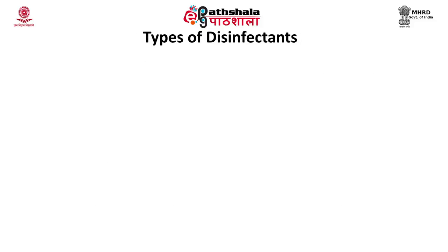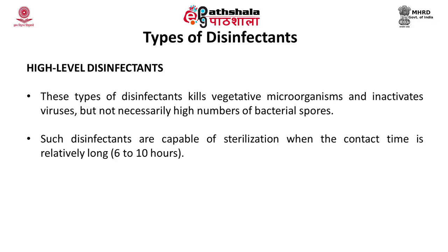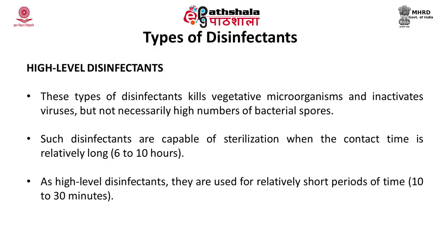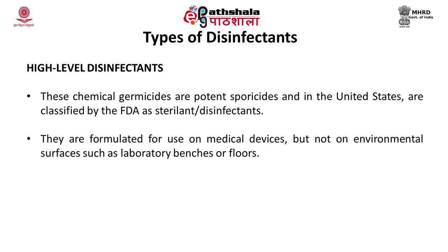Disinfectants are characterized into three activity levels according to US EPA classification. The first class is high-level disinfectants. These kill vegetative microorganisms and inactivate viruses, but do not necessarily kill high numbers of bacterial spores. They are capable of sterilization when contact time is relatively long, approximately 6 to 10 hours. Used for relatively short periods, these chemical germicides are potent sporicides, classified by the FDA as sterilants or disinfectants, formulated for use on medical devices, not environmental surfaces like laboratory benches or floors.